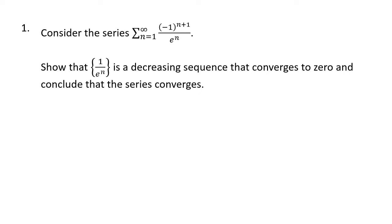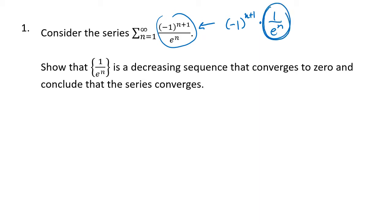There are two things we need to show to demonstrate that a series converges using the alternating series test. We have to show that if we get rid of the alternating sign, the resulting sequence is decreasing and converges to zero. We can think of the expression with minus one to the n plus one as just creating the alternating sign, so we separate that out and focus on the numbers — in this case, 1 over e to the n.